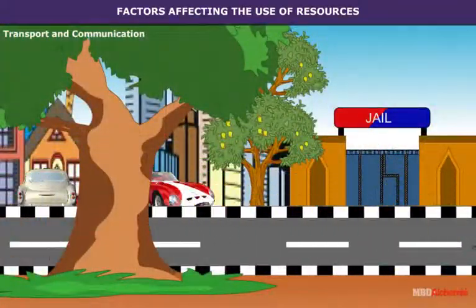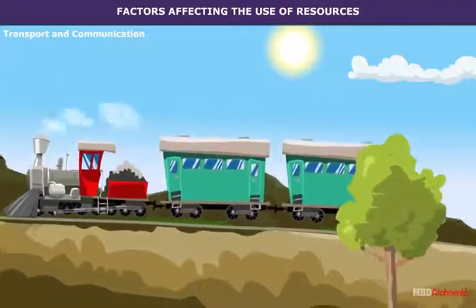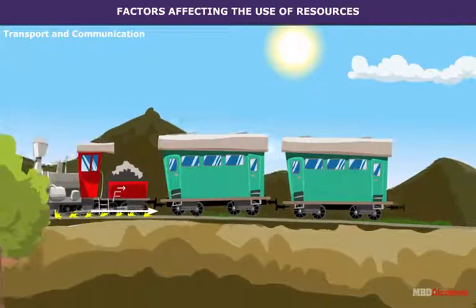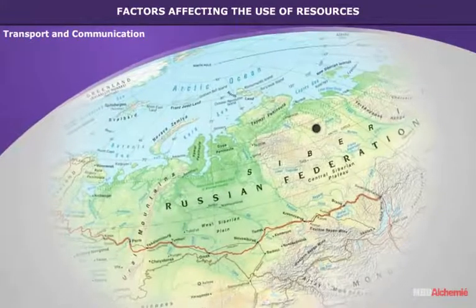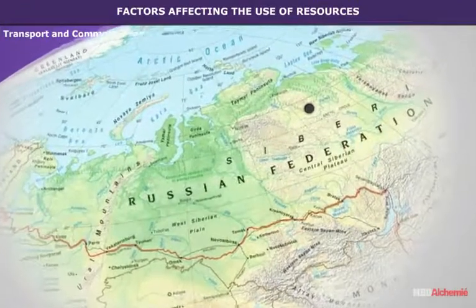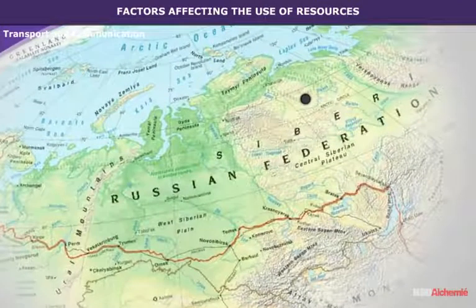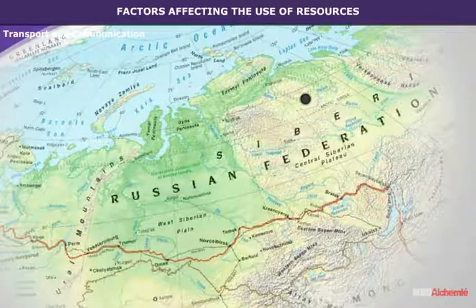Transport and Communication: many areas on the Earth are inaccessible, and transport and communication play a crucial role in reaching those areas. For example, Siberia in Russia has huge resources, but due to the lack of transport and communication, these resources cannot be exploited. It is only recently that human settlements have appeared in some parts of Siberia.